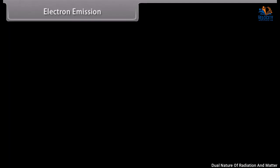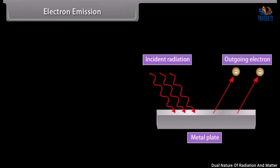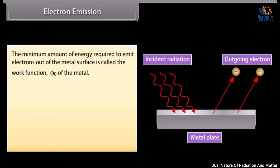In some solids called metals, the electrons — particularly the outer ones — are so loosely bound to their parent atom that they can easily move from one atom to another and move about in the solid. These electrons are called free electrons, as they are free to move inside the solid but cannot leave the solid on their own. These electrons are held inside the metal surface by the attraction of the ions and surface forces. Thus, these electrons require a certain amount of energy to come out of the metal surface. The minimum amount of energy required to emit electrons out of the metal surface is called the work function, phi-zero, of the metal.